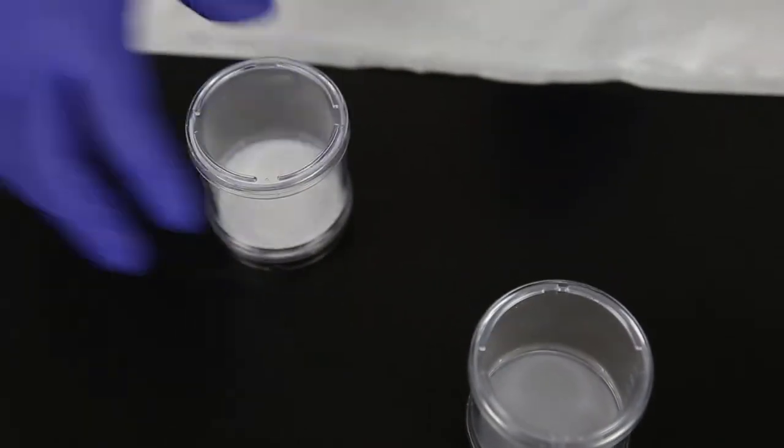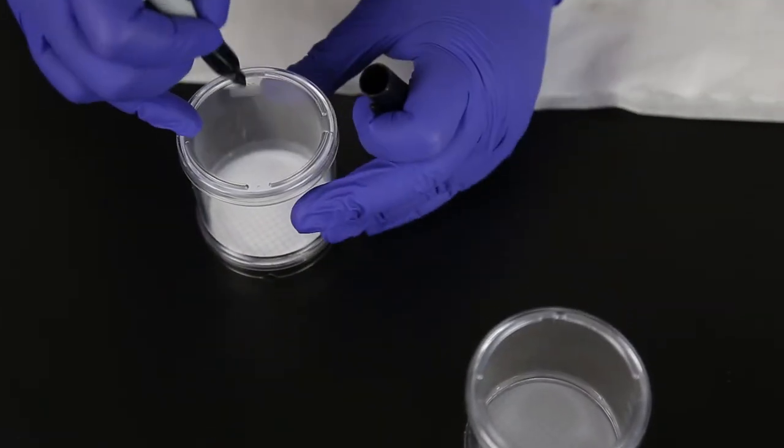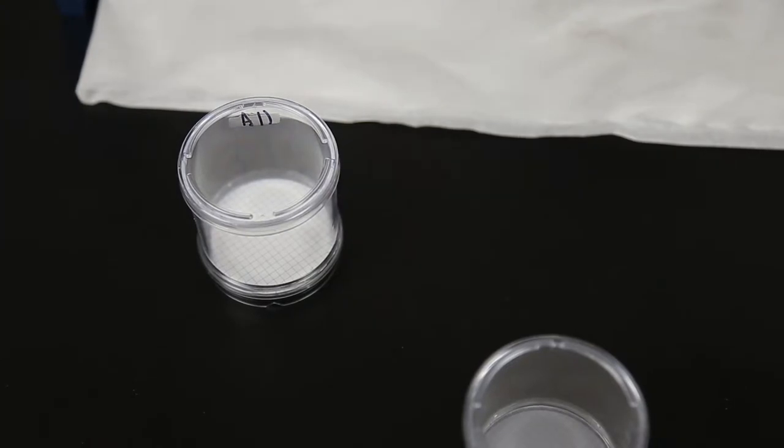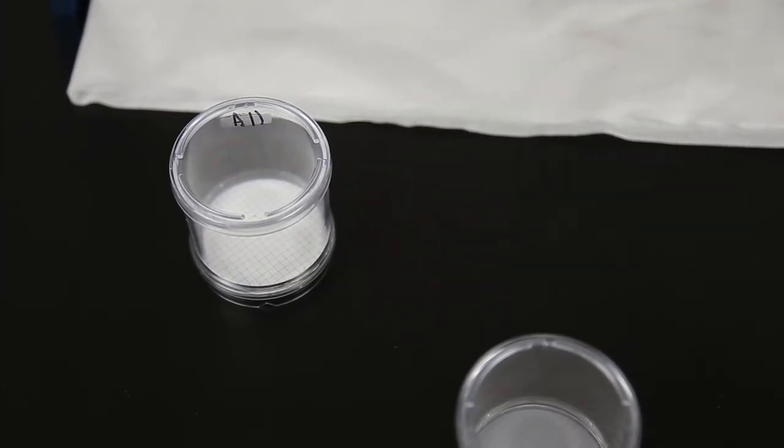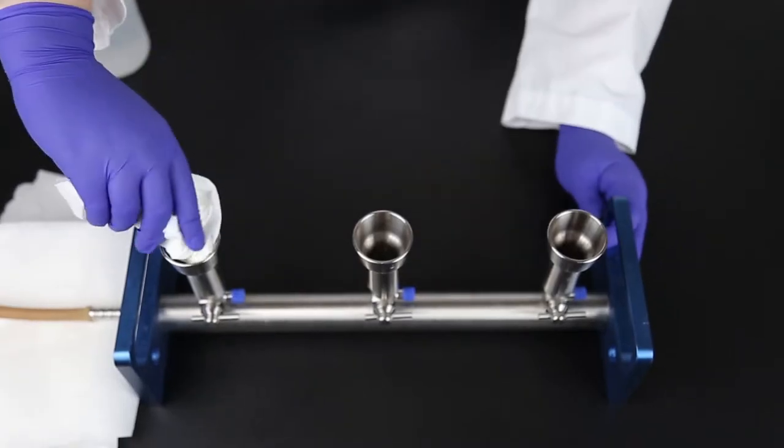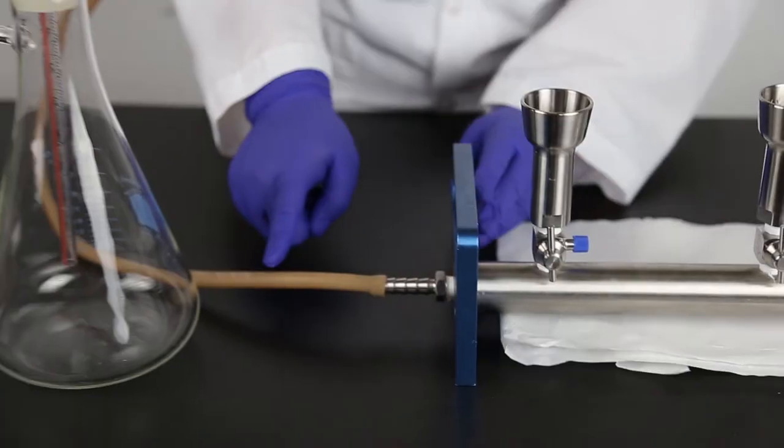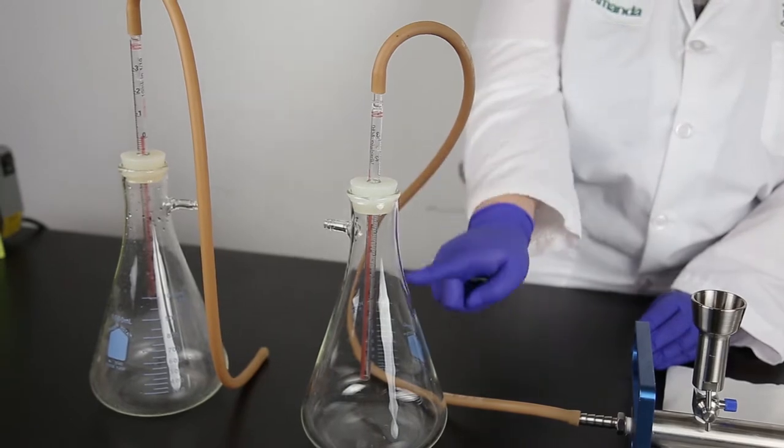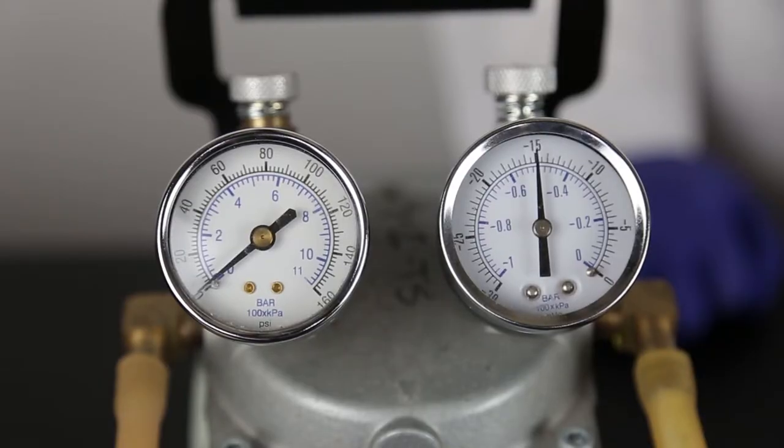Begin by choosing either white or black Neogen filters depending on your need. This would also be a good time to make sure they are labeled appropriately for the samples you are running. Ensure the equipment has been cleaned and set up properly. This should include checking to make sure the vacuum pressure is set to no higher than 15 psi.